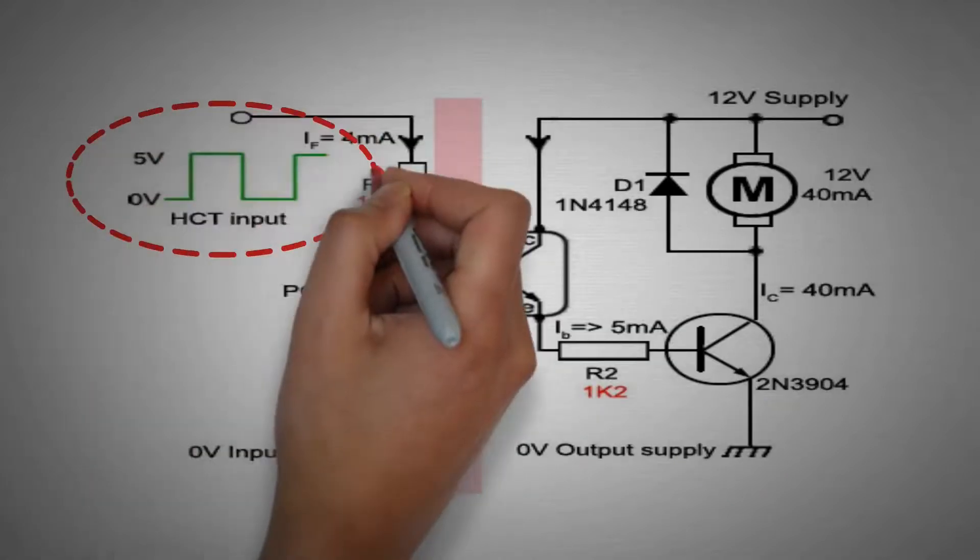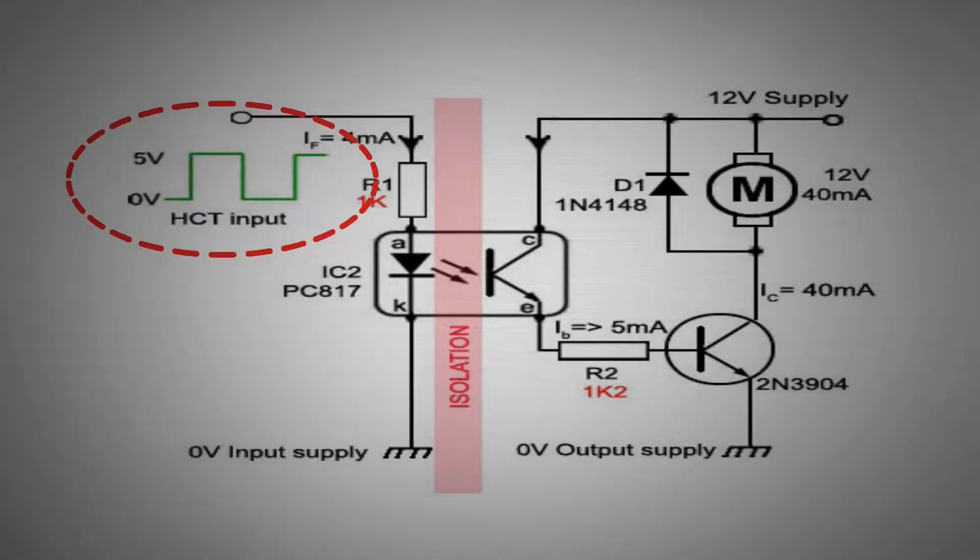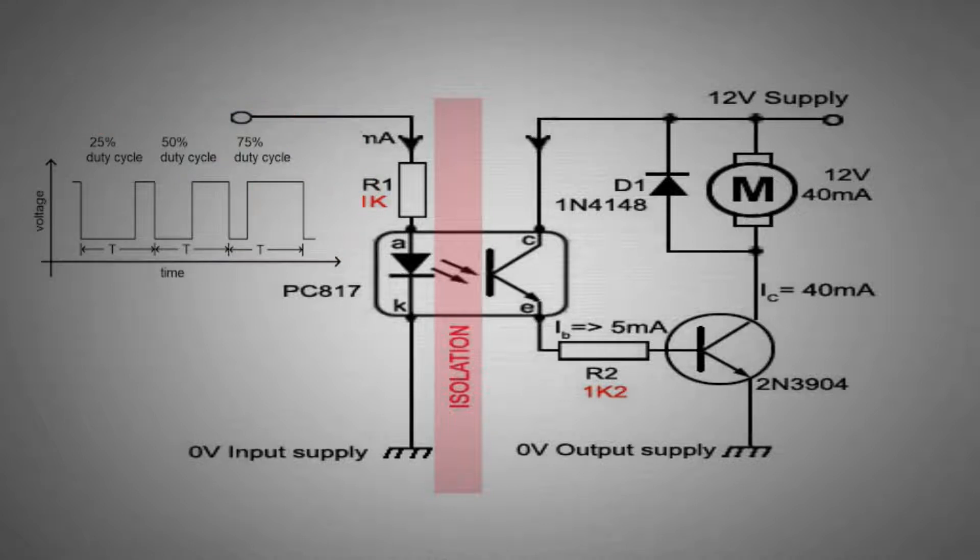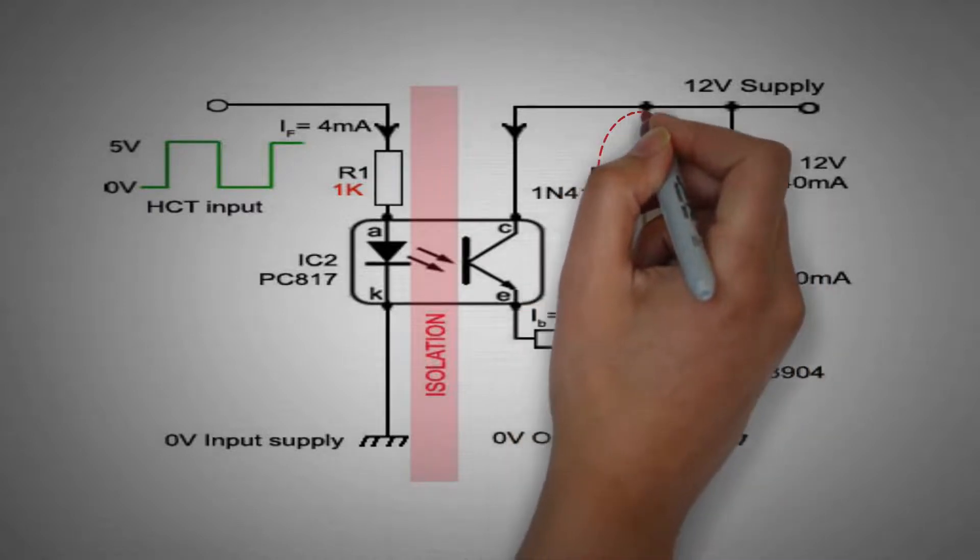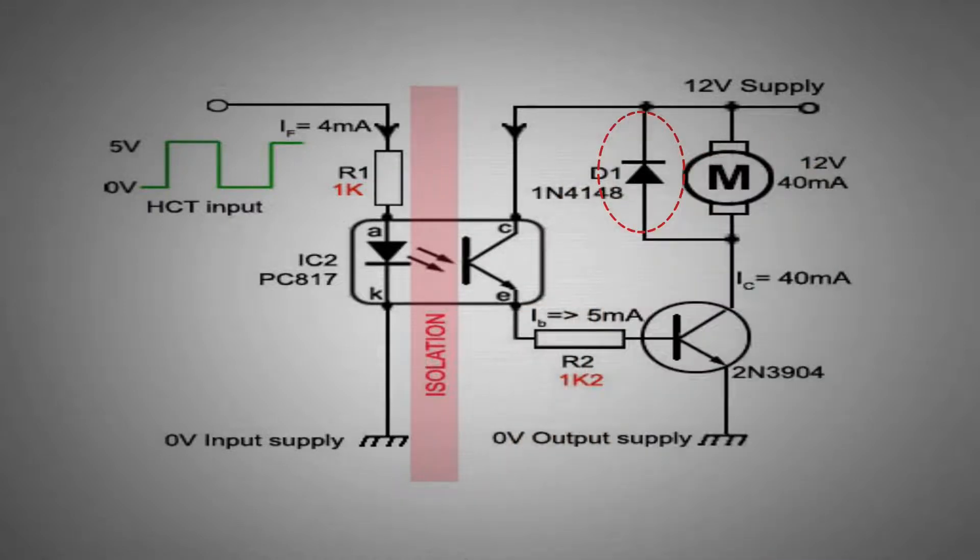This basic interface only allows for switching the motor on or off. It could easily be adapted by changing input to PWM speed control from digital controller. This simple interface has one more safety feature: diode D1 connected across the motor will effectively prevent any nasty back EMF spikes generated by the inductive load from causing damage to the interface.